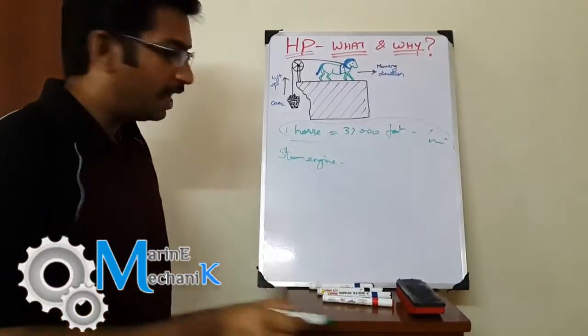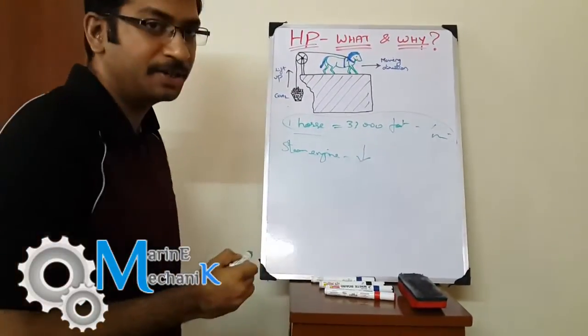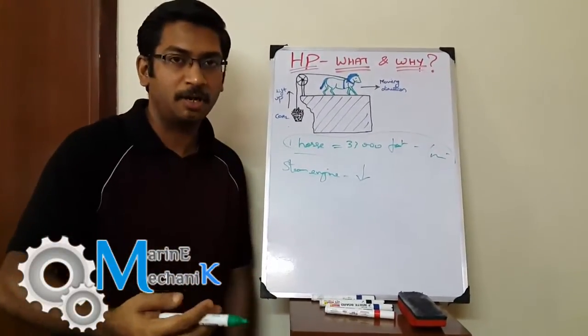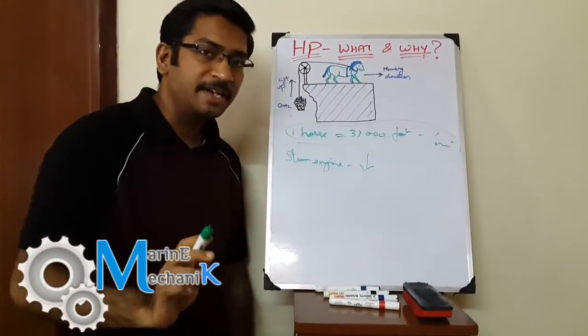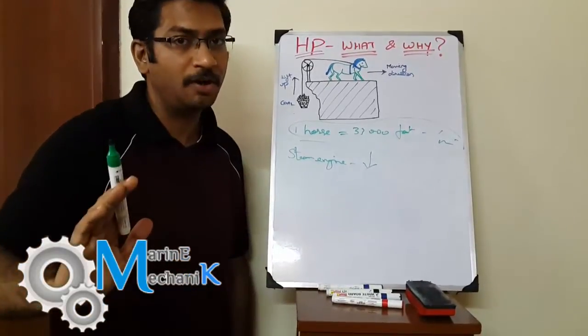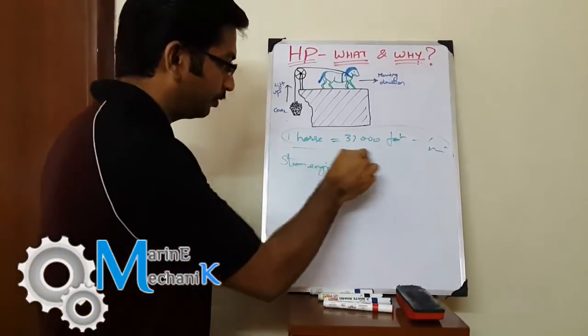What he did is he quantified the amount of work done by a horse and compared it with the steam engine. He made a tabular column and presented it to the market, stating that his single steam engine could replace 10 to 50 horses with respect to this work.